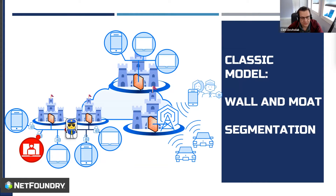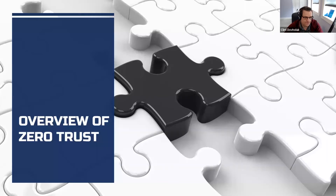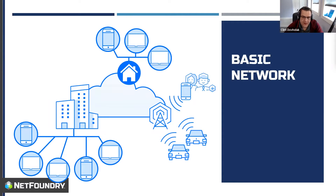The next approach is micro-segmentation — we put Ziggy in a policeman's outfit and say: make sure no traffic gets from the attacker to the target computer. That works really well, so we can declare victory, right? No. The attacker will find another laptop that needs access to both the light blue and dark blue networks, compromise that machine, and use it to continue their expedition to find that target machine. This has actually happened recently and been in the news. So let's look at how zero trust might help.